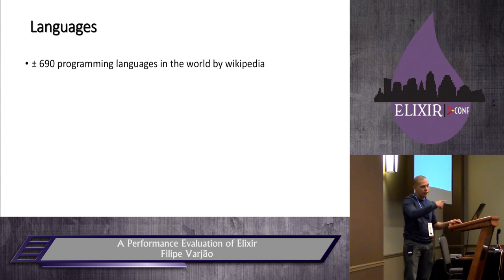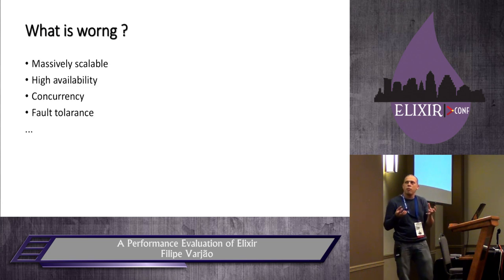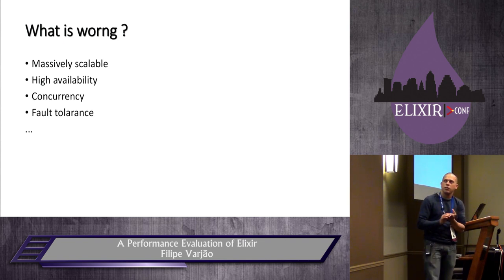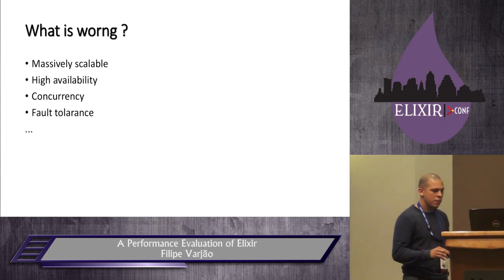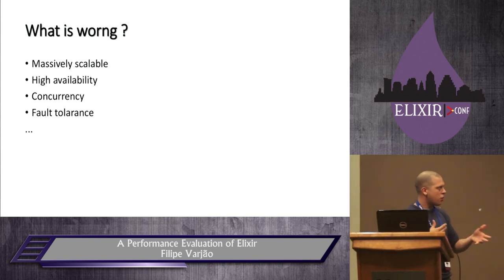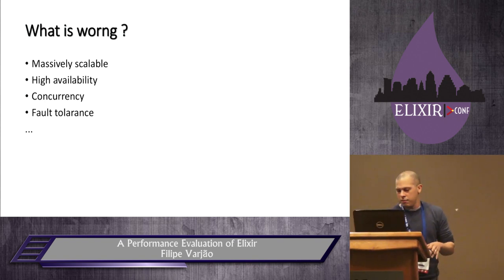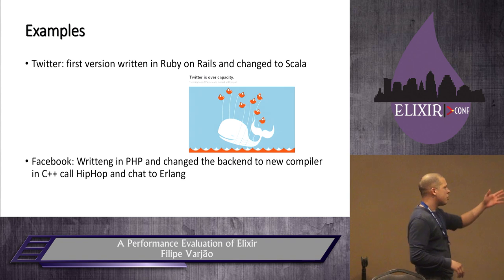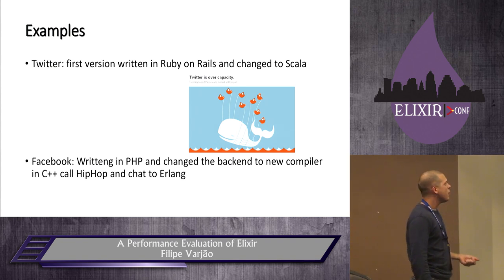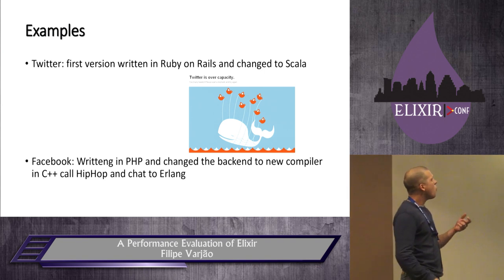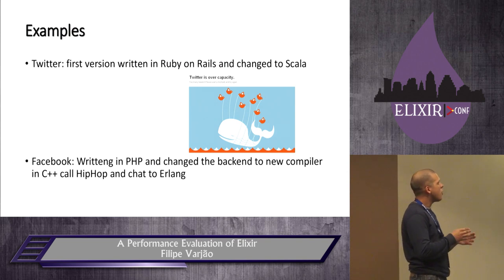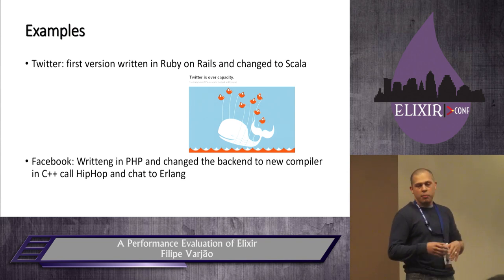So what's the problem? Now we have problems with massive scalability, high availability, concurrency, and fault tolerance. Some time ago it was very common — when you tried to log in to Twitter you saw that fail whale. Why was that common in the past? Because the first version of Twitter was written in Ruby on Rails.